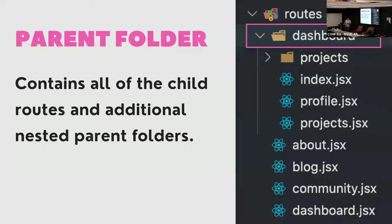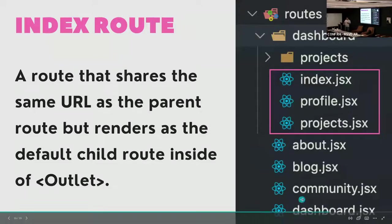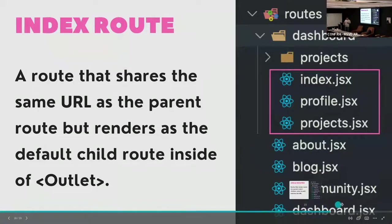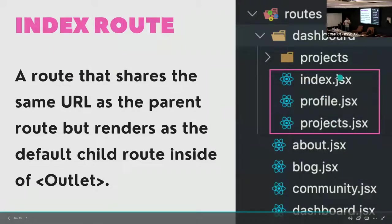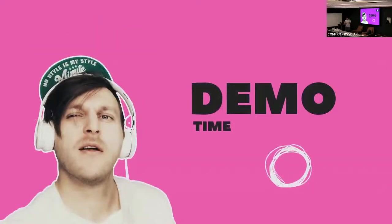The index route is something I just mentioned. It's a route that shares the same URL as the parent route but renders as the default child route inside your outlet if there's no other URL parameter provided. For instance, when you go to /dashboard, it renders what's inside Dashboard.jsx — which has the outlet — and also renders the Index.jsx file, unless you provide additional paths like /profile or /projects.